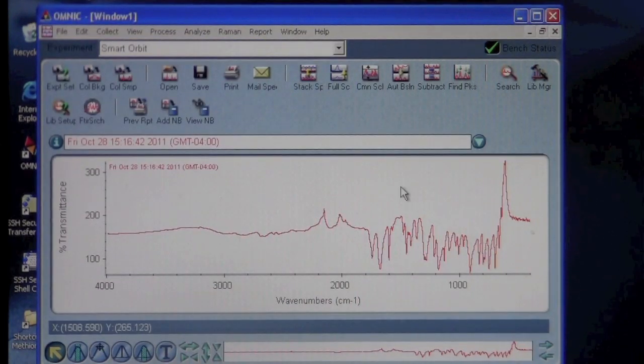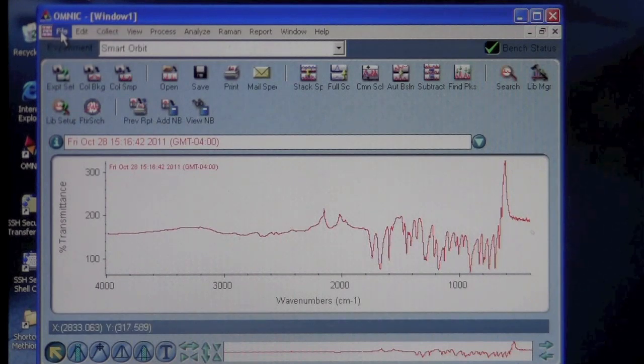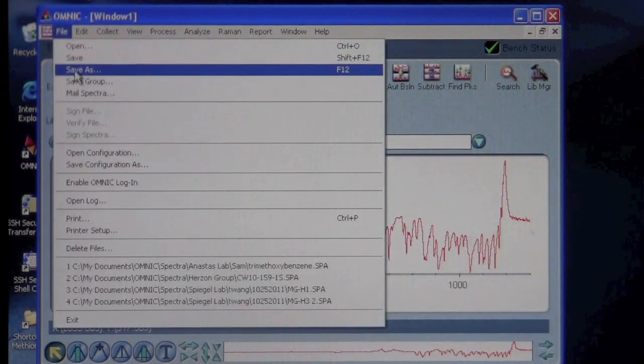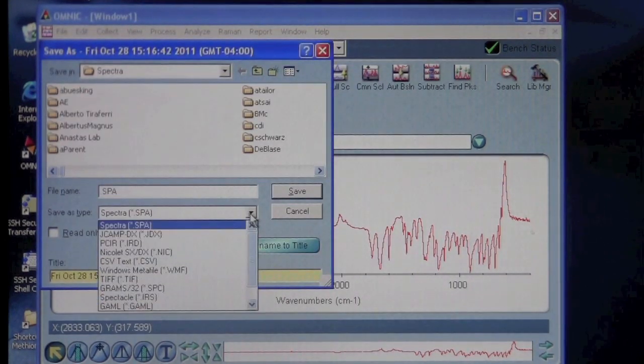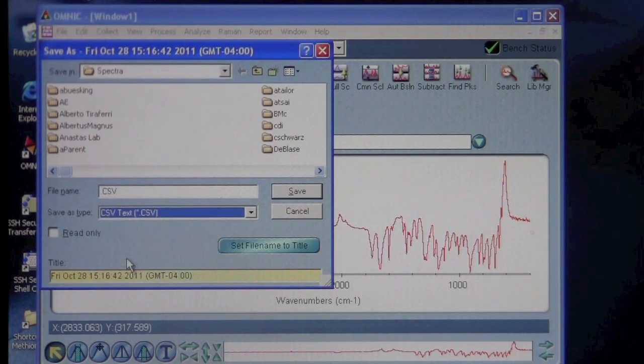Now typically we can process the data offline. Generally, what you want to do is go to File, Save As, and then you can use the file type CSV text and export it to a CSV text file, which you can then process with any data graphing program.